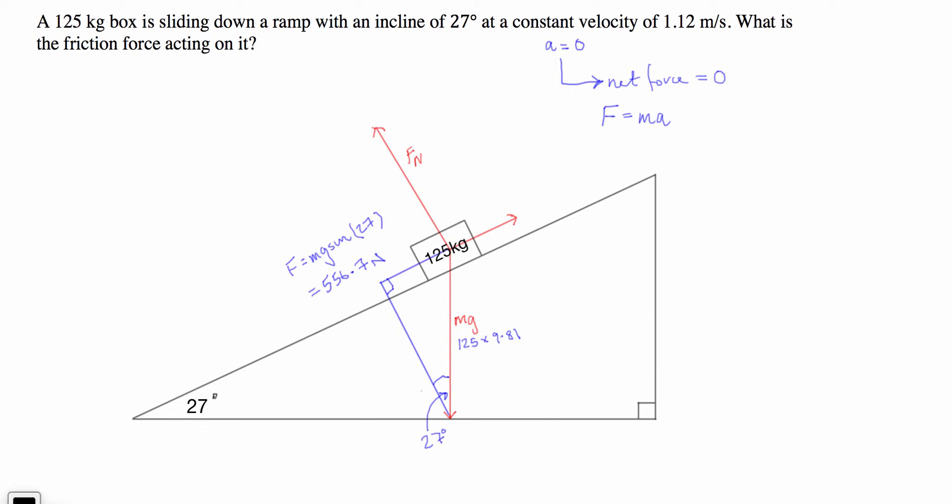So basically what we can conclude now is that, therefore, the force of friction will be 556.7 newtons in the opposite direction to the box's motion.